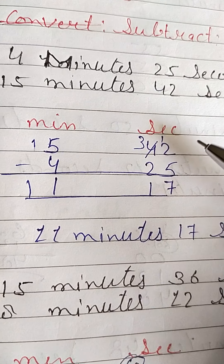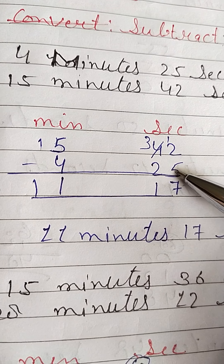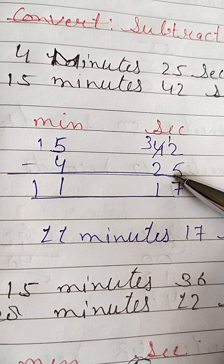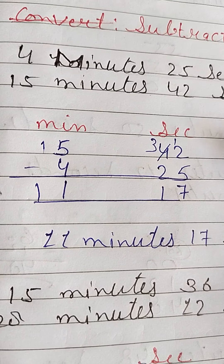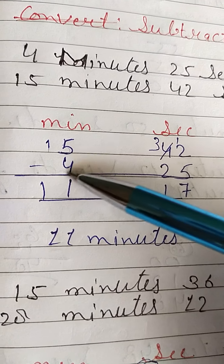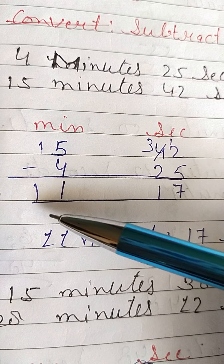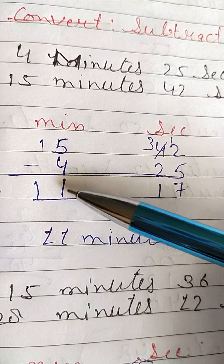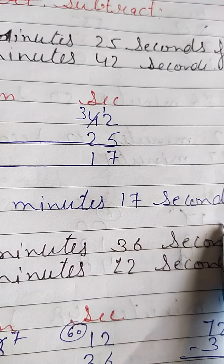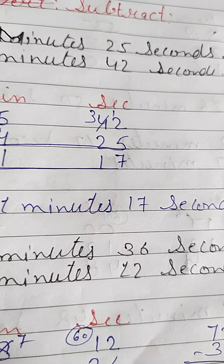So students, 42 seconds minus 25 seconds gives 17 seconds. Then 15 minutes minus 4 minutes gives 11 minutes. So your answer is 11 minutes and 17 seconds.